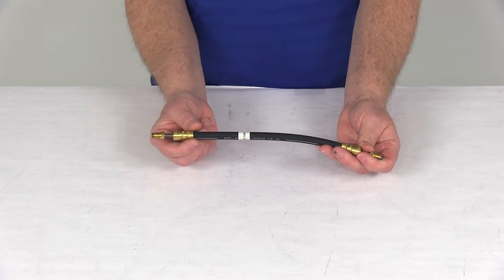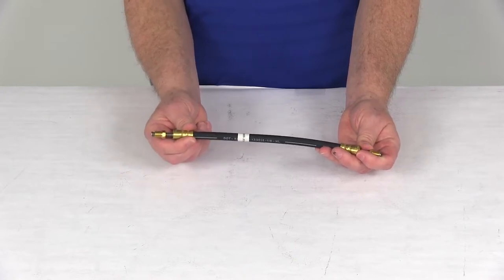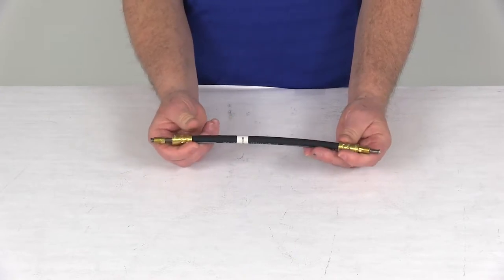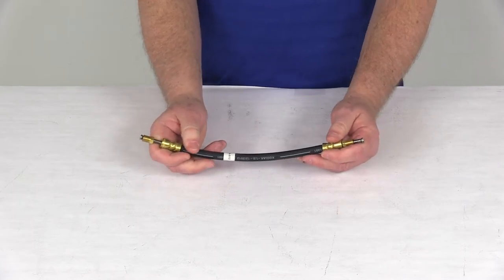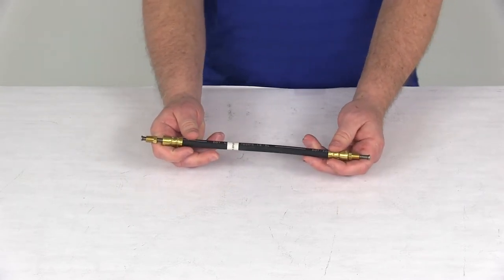If you notice also, the fitting has double crimped brass ferrules right here which will securely clamp it to the hose, and the rubber hose does meet the DOT, Department of Transportation, and SAE standards.